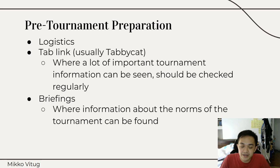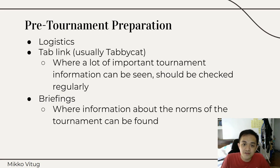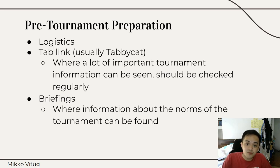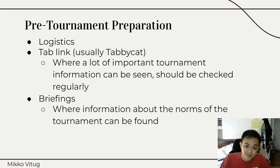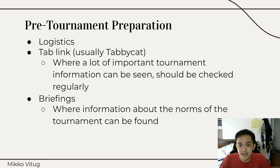Next, you will have a tab link. Nowadays it's TabbyCat — it's quite a good platform. It's where a lot of important tournament information can be seen, and you should check it regularly because it's updated live. This is where you will see, for example, how many points you're on, or who your opponent is for the next round. It's important to check this regularly to make sure you're not missing anything. You will be given your own access to this platform, which is much better than the old days when you'd just sit in the same room and watch a projector screen. This is also where you'll be submitting anything you need to submit — if you're a speaker, you'll submit your assessment of the judge; if you're a judge, you'll submit the results of your round.